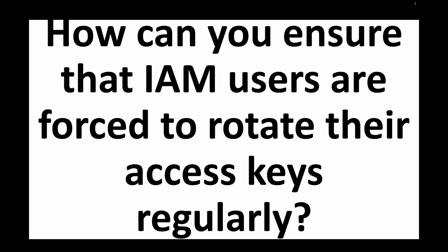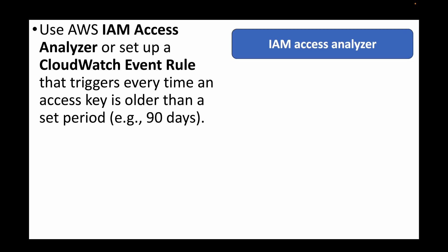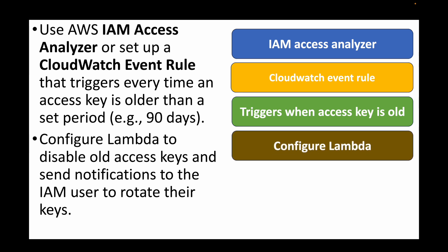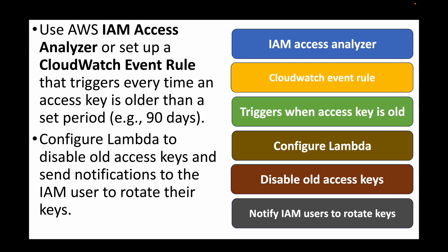The next question is: how can you ensure that IAM users are forced to rotate their access keys regularly? For this we can use IAM Access Analyzer, or set up a CloudWatch event rule that triggers whenever an access key is older than the set period — typically 90 days is the standard. We configure Lambda to disable old access keys and send notifications to IAM users to generate new keys. This ensures users are rotating their keys and not keeping them for extended durations.